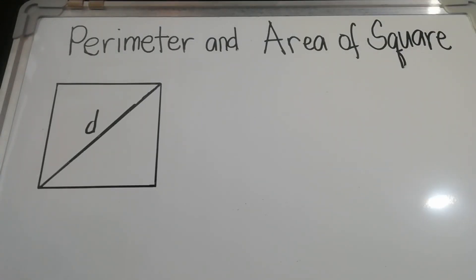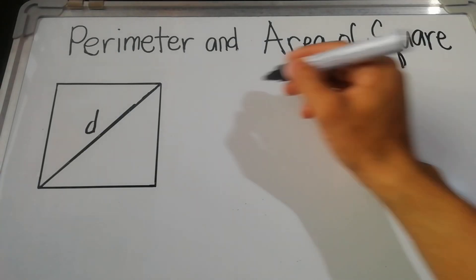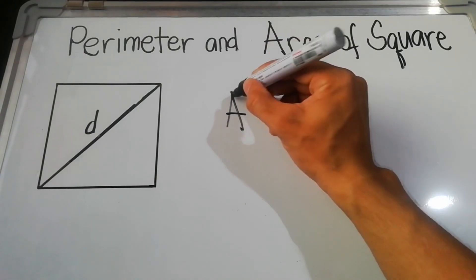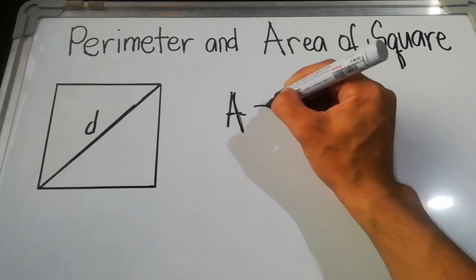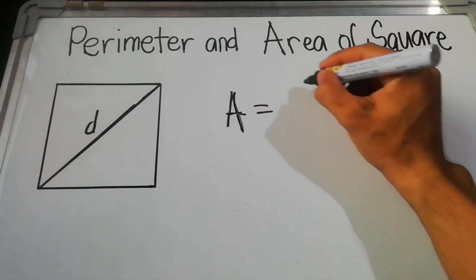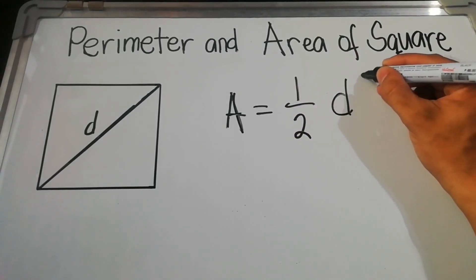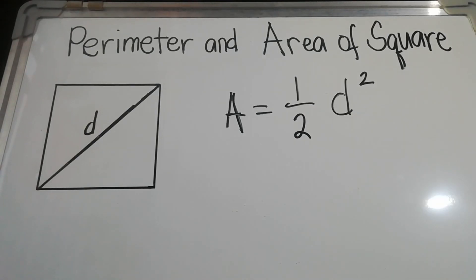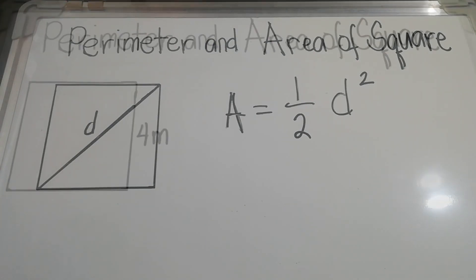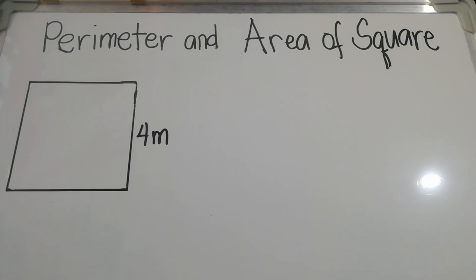If the given is the length of the diagonal, the formula for the area of the square is A = one half d squared, or diagonal squared. This is the formula for the area of the square when the length of the diagonal is given.